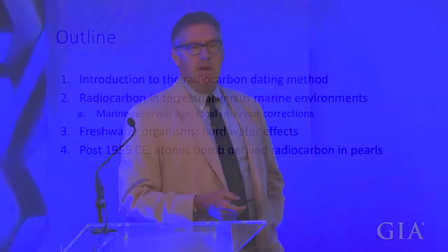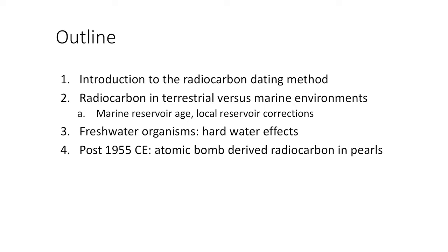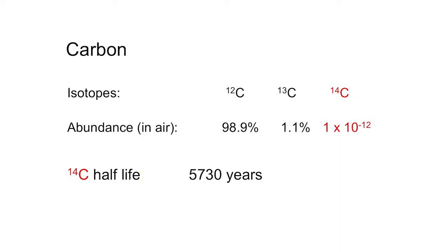I'm going to talk about radiocarbon dating in terrestrial and marine environments, in freshwater environments, and then the perturbation of the environment by above-ground nuclear testing in the mid-20th century and how that affects pearls. Basic information: carbon has three naturally occurring isotopes. Carbon-12 and carbon-13 are 99% and 1% of carbon in the environment. Carbon-14, the radioactive isotope, is one part in 10 to the minus 12 compared to carbon-12. The radioactive element has a half-life of 5,700 years. We can measure three orders of magnitude down to 10 to the minus 15, representing about 10 half-lives, so the span of radiocarbon measurement is 45,000–50,000 years.